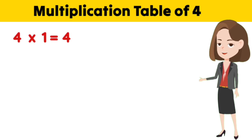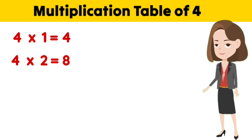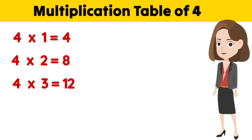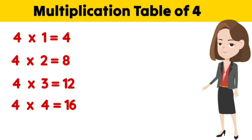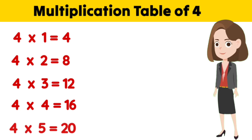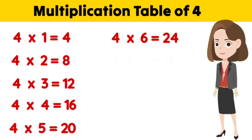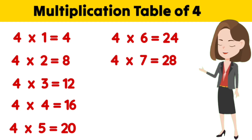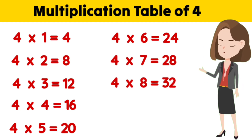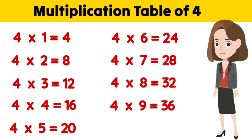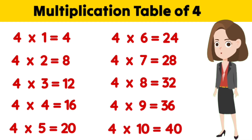Four ones is four. Four twos are eight. Four threes are twelve. Four fours are sixteen. Four fives are twenty. Four sixes are twenty-four. Four sevens are twenty-eight. Four eights are thirty-two. Four nines are thirty-six.